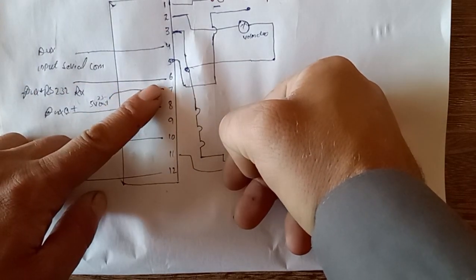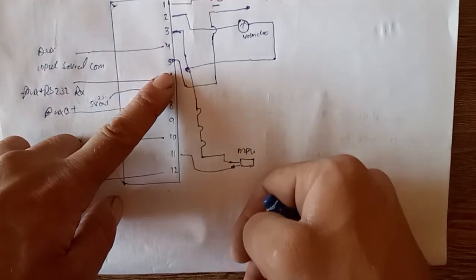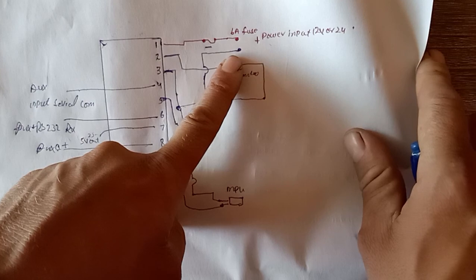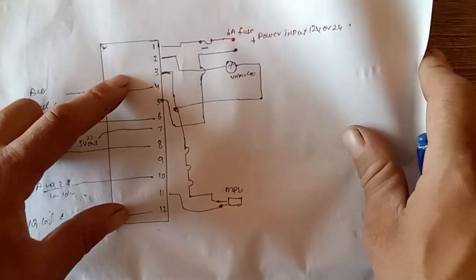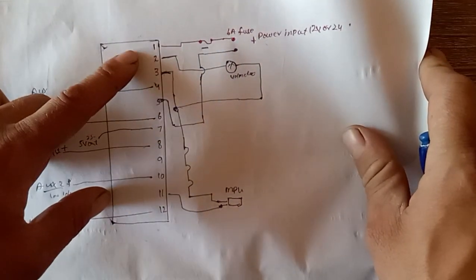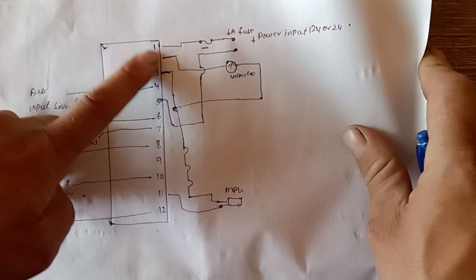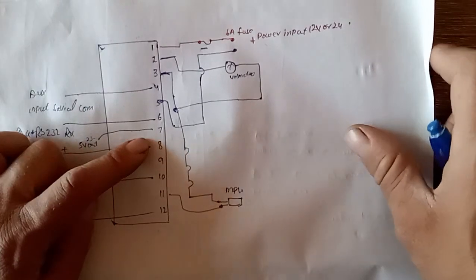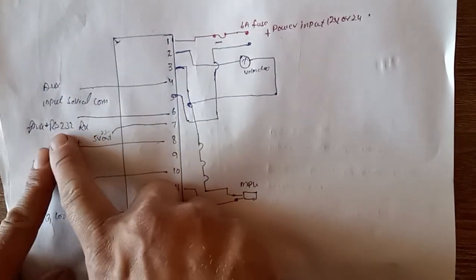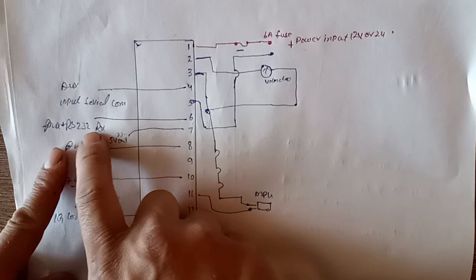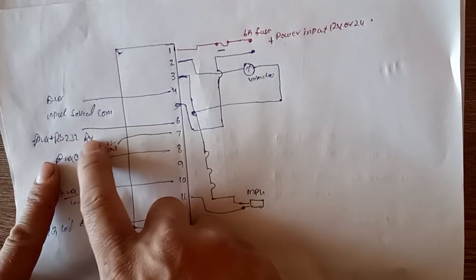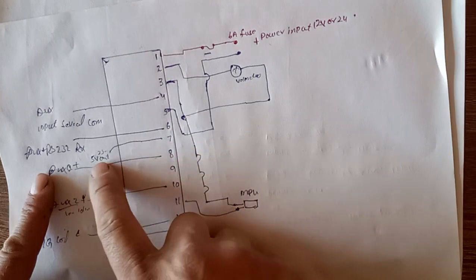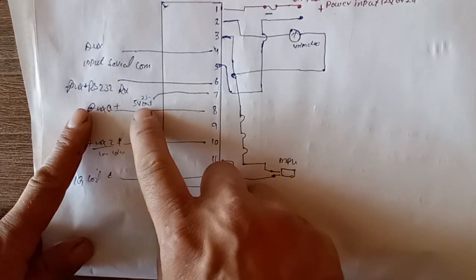Five number is going to negative. This is the power input - one is positive and five is negative. After that, the six is the communication connector, RS-232 through auxiliary. Then seven is, as you can see here, five volt output for the sensor, auxiliary output.